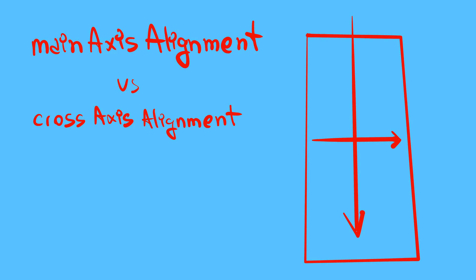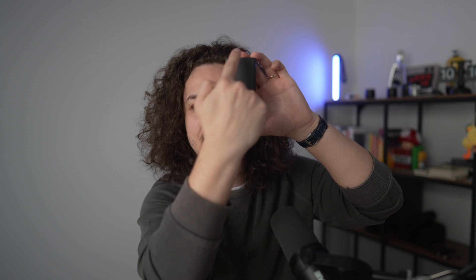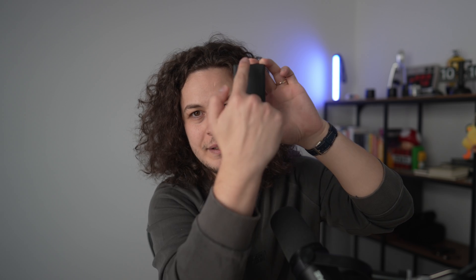When do you use main axis alignment versus cross-axis alignment? This is not a trick question — just give an example. If you have a column and you want the text to be in the middle, you would use cross-axis alignment center, because the main axis for a column goes straight down and the cross-axis is horizontal. For a row, it will be the other way around.